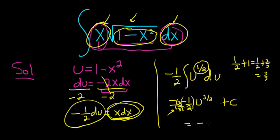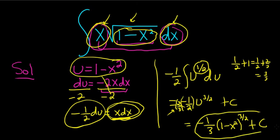The 2's cancel. So you get negative 1 third. And then now we just go back to x. So u was 1 minus x squared. So this is 1 minus x squared. And the whole thing is to the 3 halves plus our constant of integration capital C.